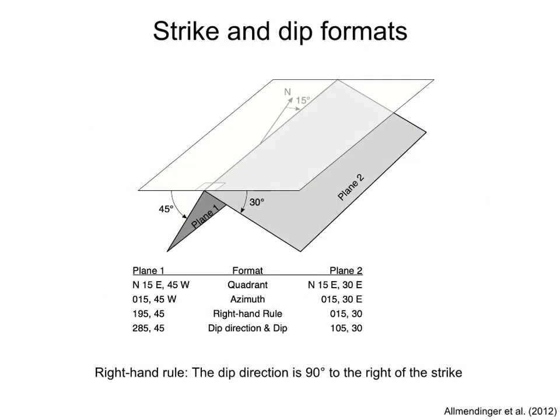The measurement of strike is a little bit ambiguous. We can measure the strike with respect to either end of the horizontal line. Therefore, when reporting strike and dip, we need to add the direction in which the plane dips. This is illustrated in the figure for two planes of similar strike but opposite dip direction: plane 1 dips to the west, while plane 2 dips to the east.